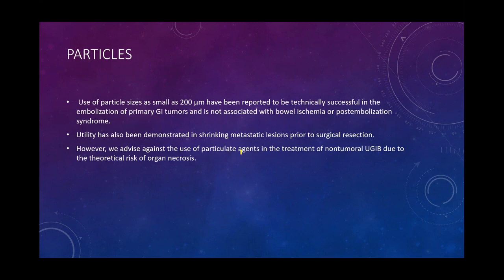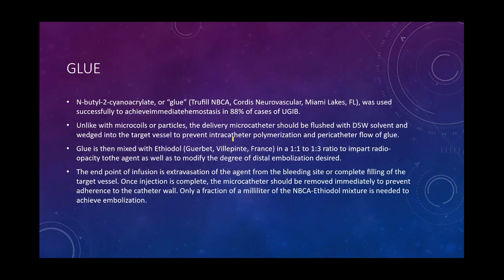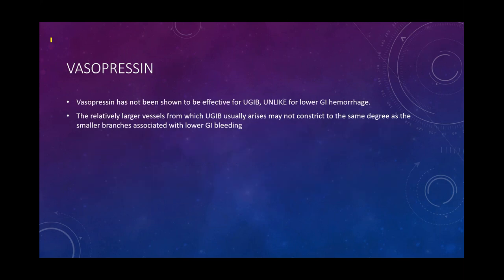Particles can also be used for embolization. The goal is not bowel necrosis, but to alleviate increased arterial pressure and decrease bleeding without causing organ ischemia. Vasopressin is not particularly effective for upper GI bleeds but is quite effective for lower GI bleeds. After a successful catheter angiogram, ensure proper follow-up: aspirin can be resumed after multidisciplinary discussion, verifying that cardiovascular risks outweigh the re-bleeding risk.